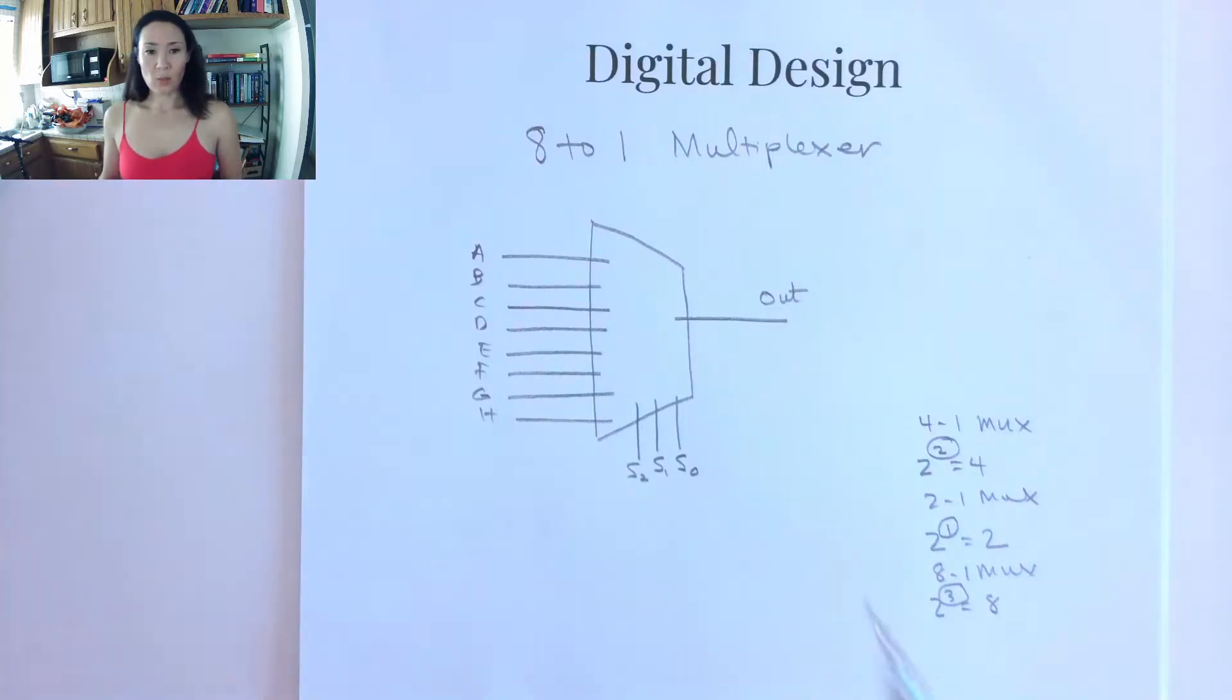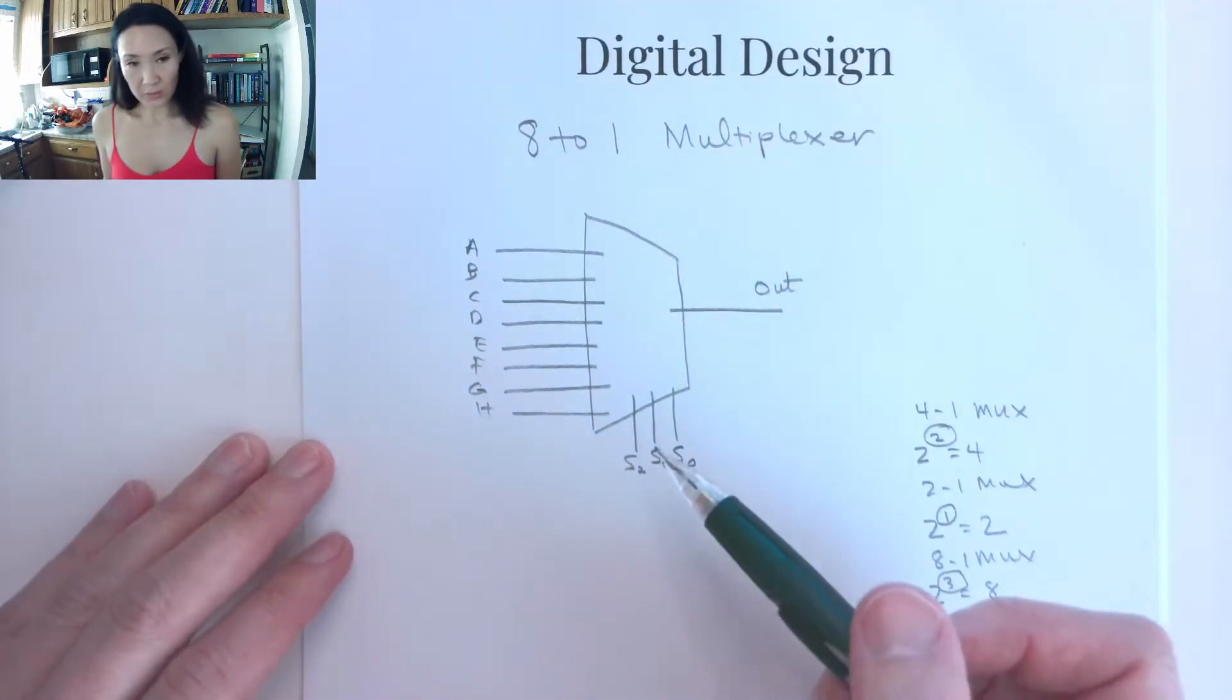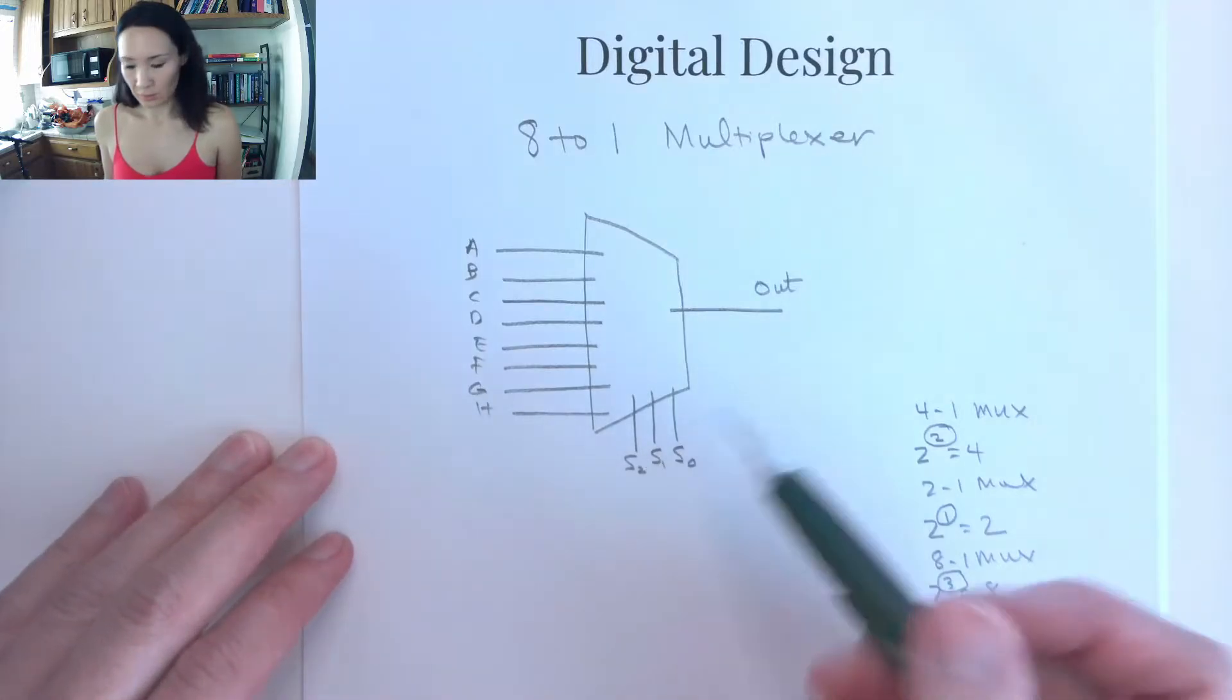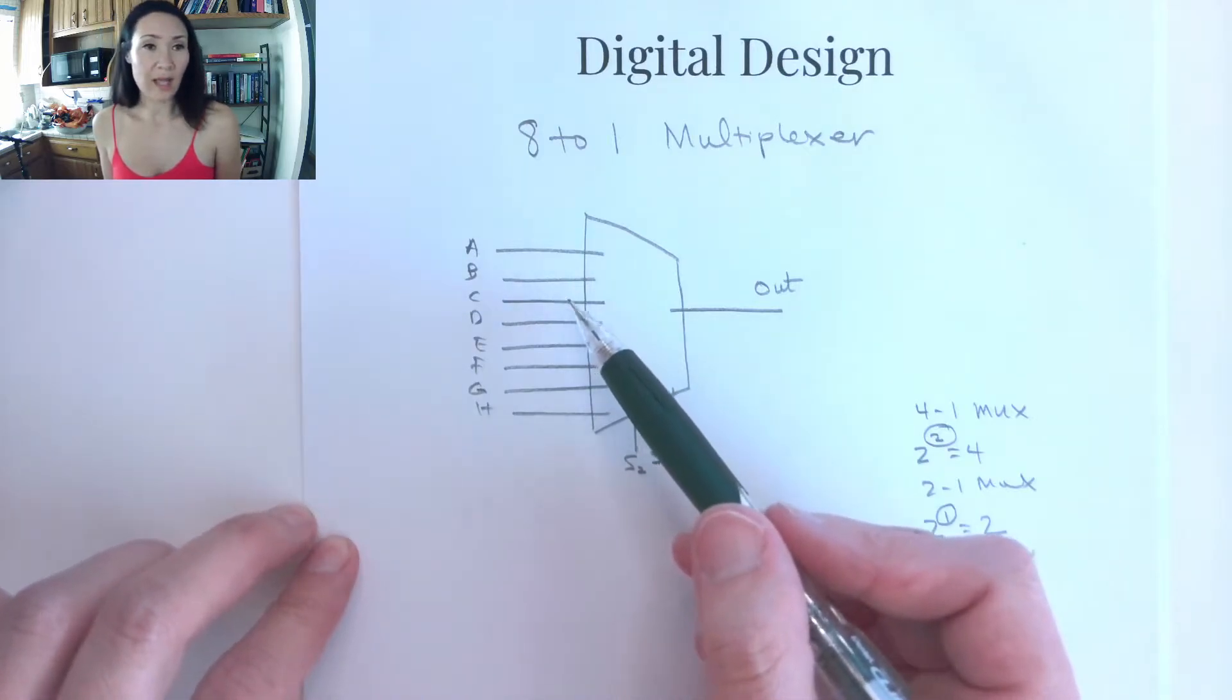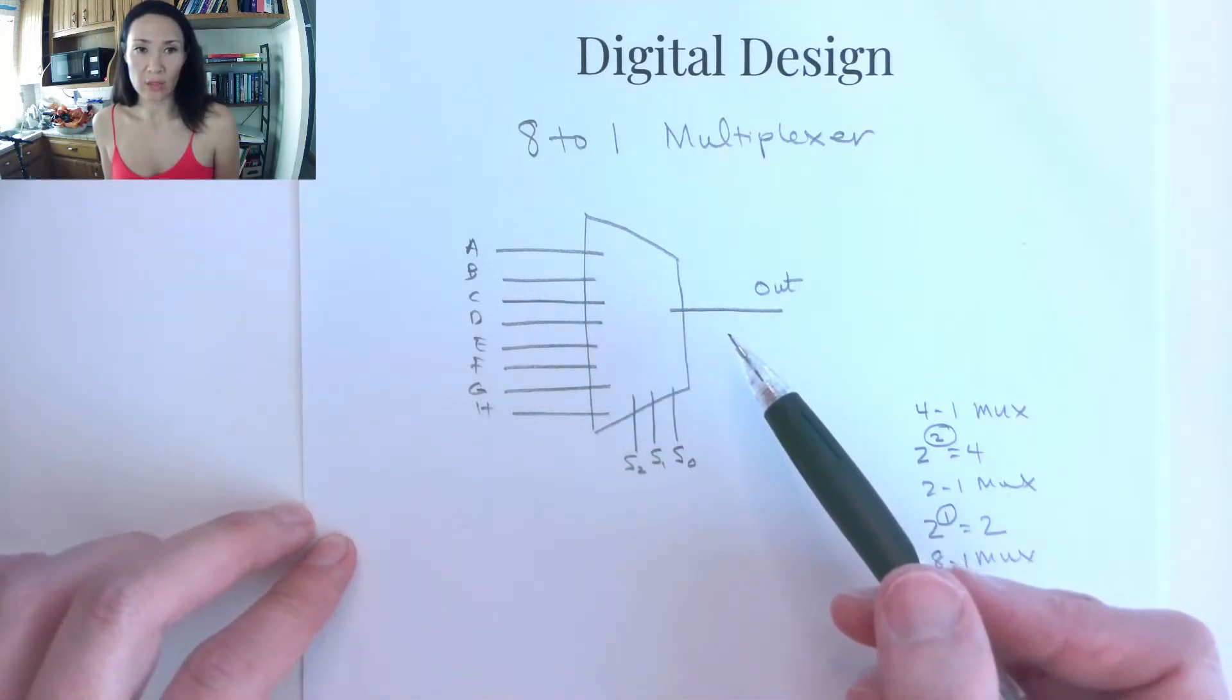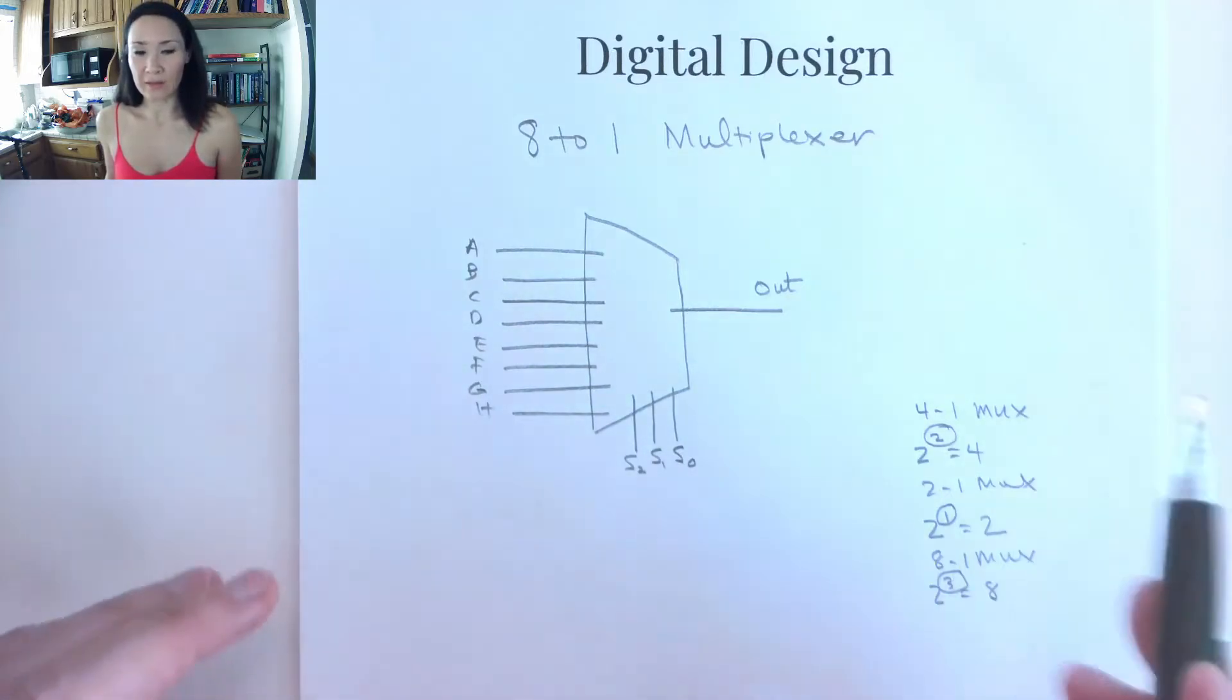So if this is our 8-to-1 multiplexer, we're going to have a lot of don't cares, just like with the other multiplexers, because at every case it's only going to select one data line and pipe it to the output. So whatever's coming in to all these other inputs, we don't care about them. So in our truth table, we're going to have lots of nice Xs.